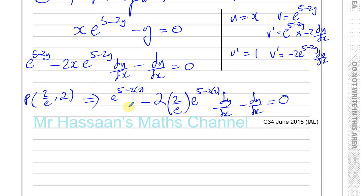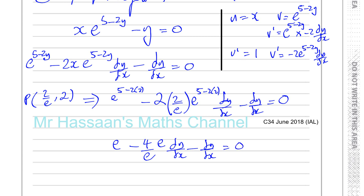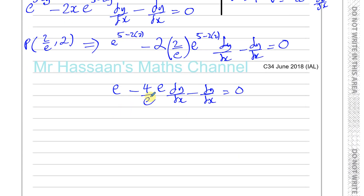So this is e to the power of 1, which is e. And this gives minus 4 over e times e — both to the power of 1, so they cancel out — times dy/dx, minus dy/dx, equals 0. So those e's cancel out and I end up with e minus 4 dy/dx minus dy/dx equals 0. That's minus 5 dy/dx on this side, so e equals 5 dy/dx, therefore dy/dx is e over 5.